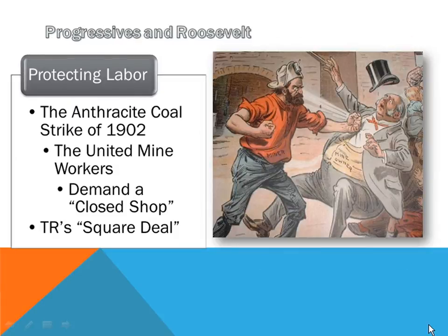When you hear about Theodore Roosevelt, one of the things he is known for is this concept of a square deal. If something is square, what do you have? Equal sides. That's why it's a square and not a rectangle.